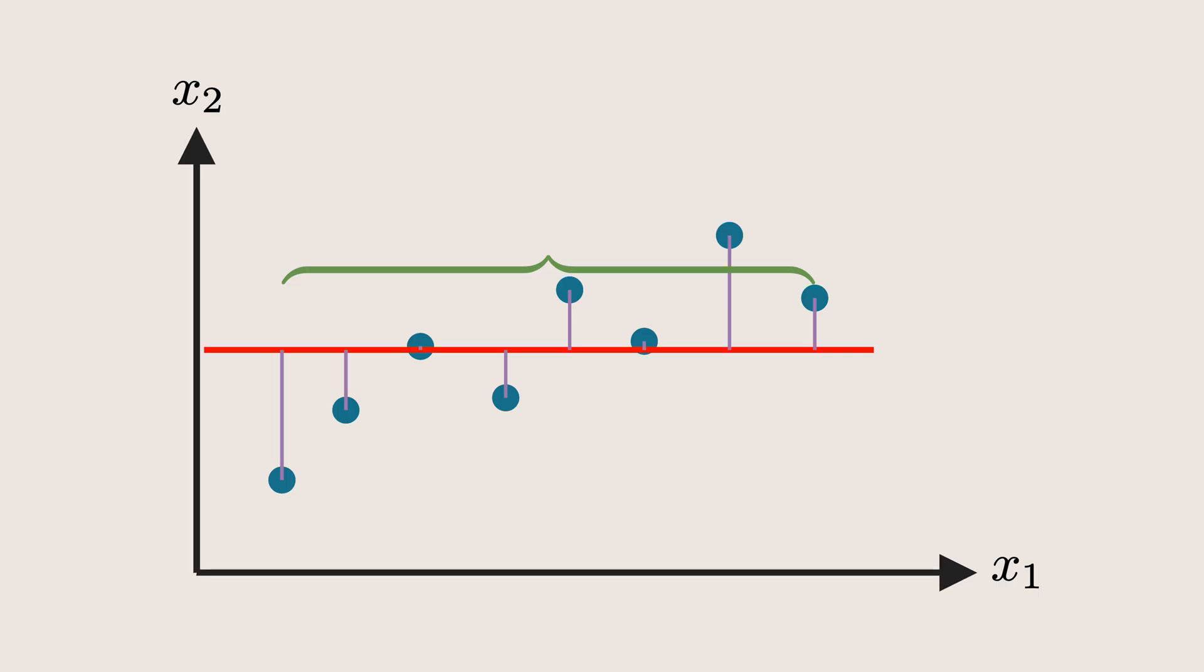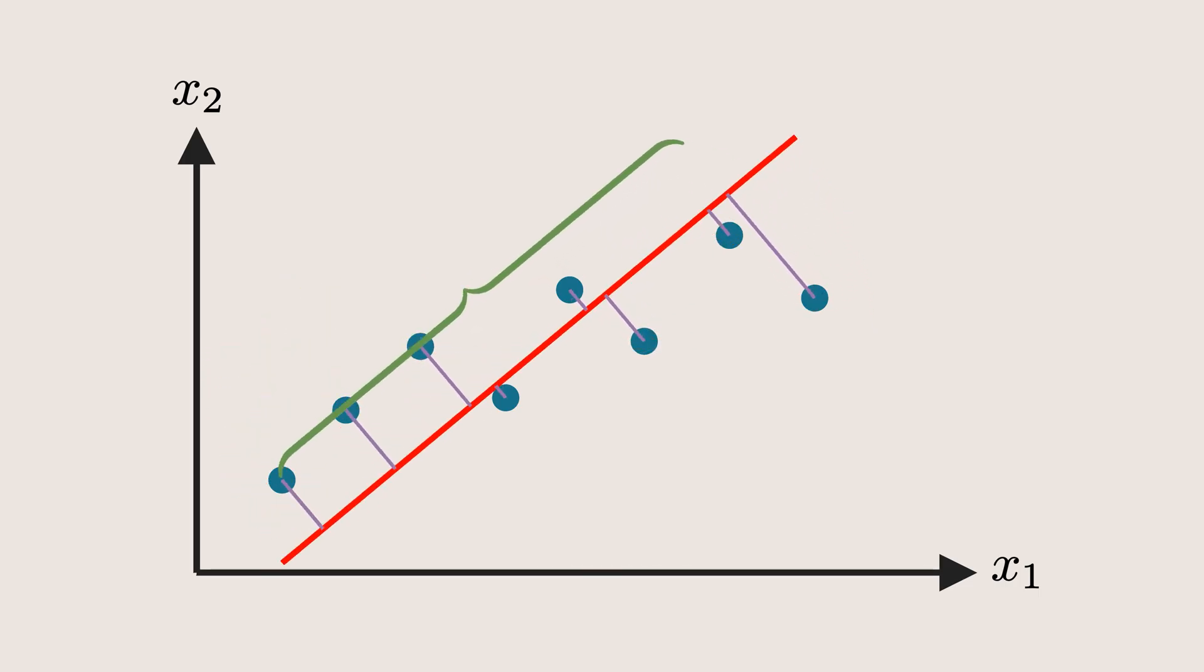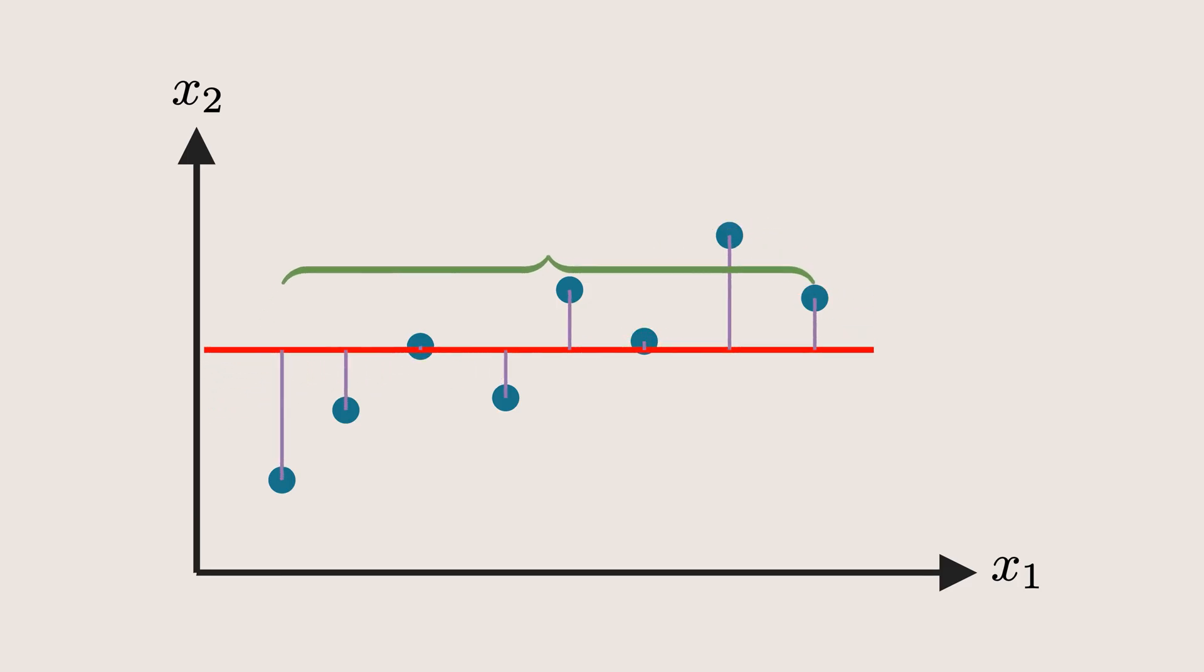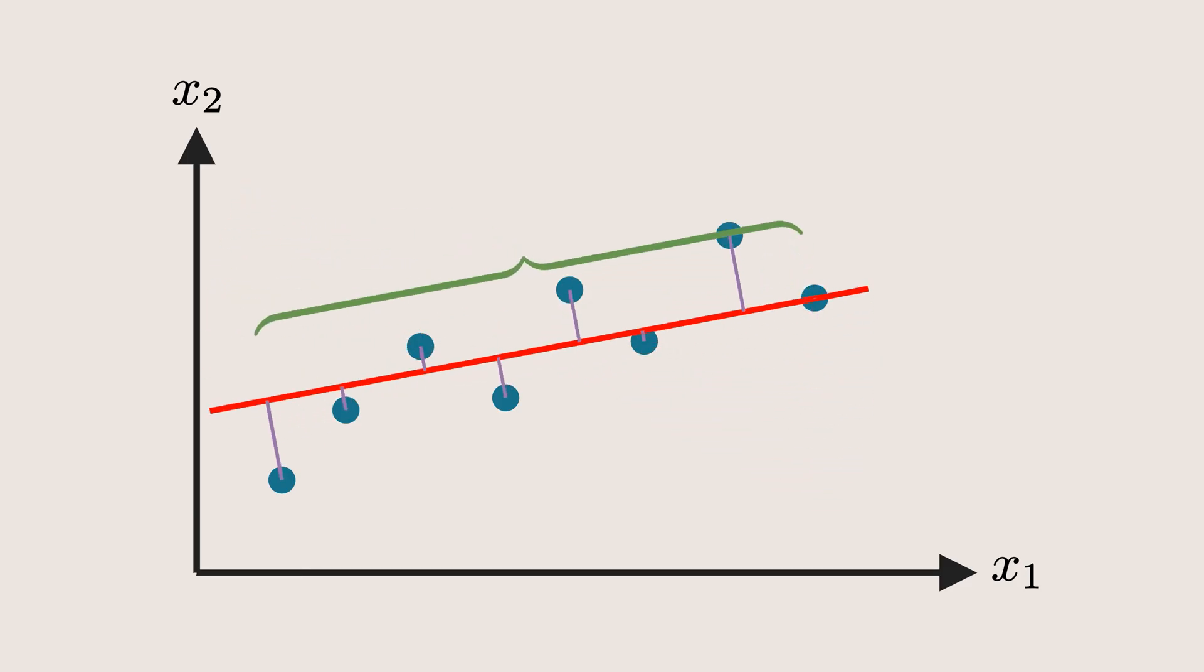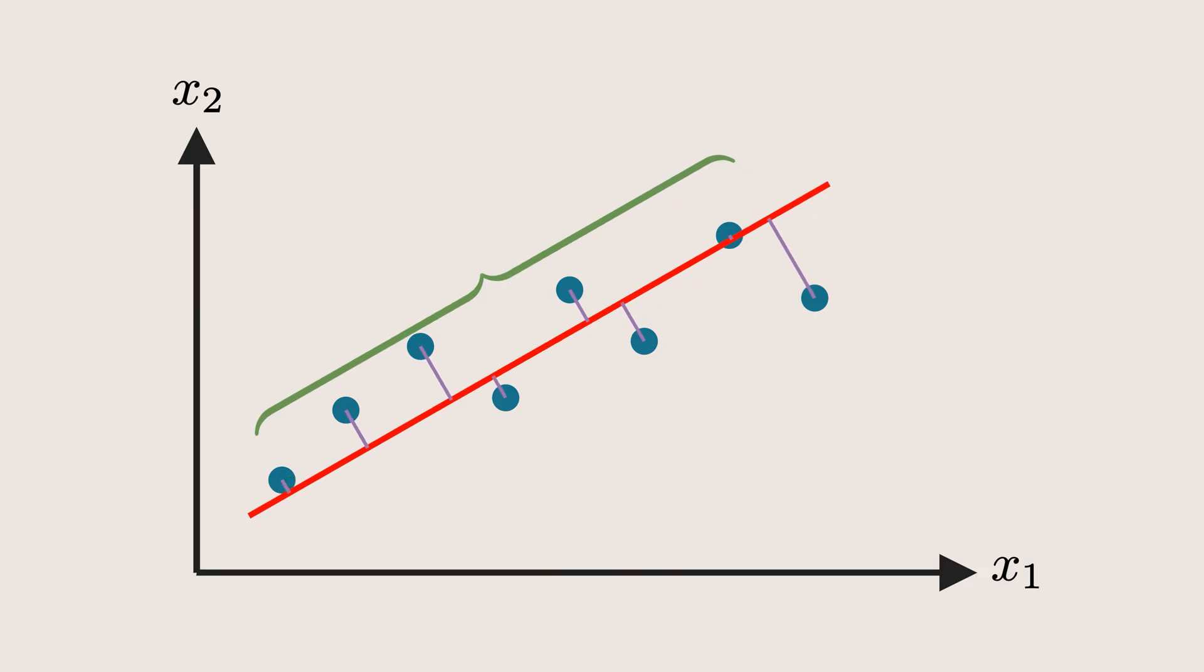You can think of this process as somewhat similar to how we find a best fit line in linear regression. Mathematically, both aim to maximize variance, though PCA does it in a different context.